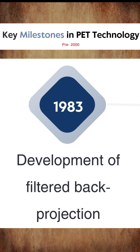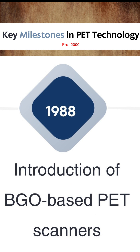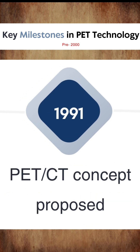In 1983, the development of filtered back projection occurred — this technology has been used very frequently in SPECT and PET, though nowadays it is not commonly used. Then in 1988, the visual PET scanner scheme emerged.